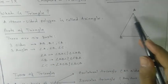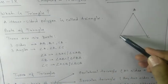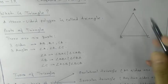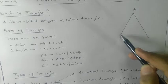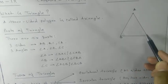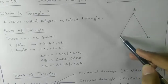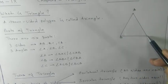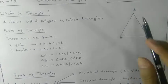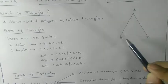Similarly, angle A can be read as angle BAC or CAB. Angle B can be read as CBA or ABC, and angle C can be read as BCA or ACB.